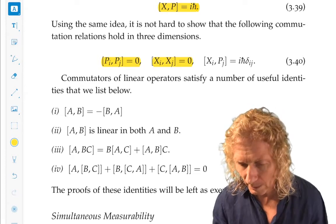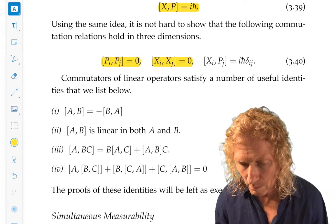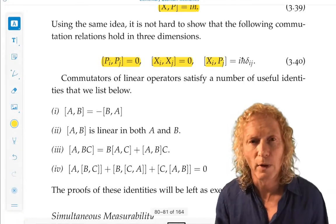The different components of position commute with each other. But now, x_i, p_j, they commute if i is different from j.